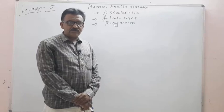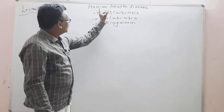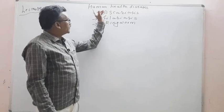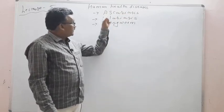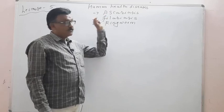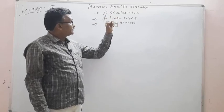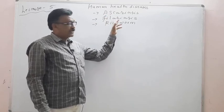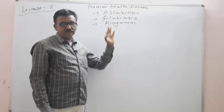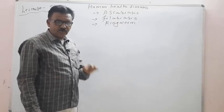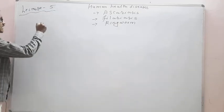Today's lecture 5 is on chapter Human Health and Disease. The first disorder is Ascariasis, the second is Filariasis, and the third is ringworm.